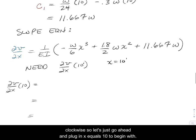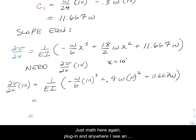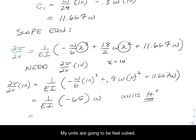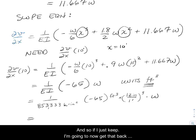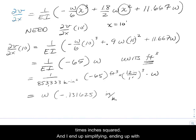Let's plug in x equals 10 to begin with. It's just math here again. Plug in and anywhere I see an x, I put 10. I'll do a little bit more math. My units are going to be feet cubed. I'm going to get that back to inches, because E and I are going to be in units of kip times inches squared. I end up simplifying, ending up with W times minus 0.131625 inches over kips.